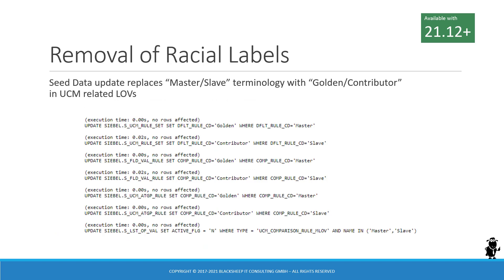A very close look at the log files of the post-install database update utility reveals SQL statements that change the LOVs, at least for UCM-related — universal customer master related — where the racial labels master and slave are replaced by golden and contributor, and the old LOVs being deactivated. This is of course a welcome move from Oracle. However, if you have any custom scripting that works with the old values, you would have to review those scripts.